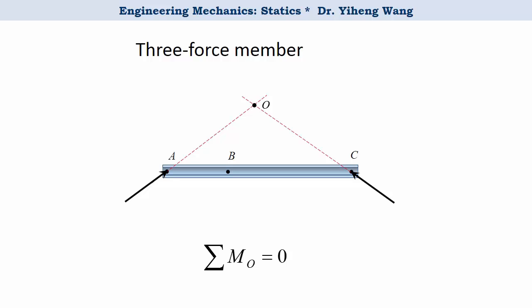Since the third force is the only force that can possibly create moment about point O, because the other two forces have lines of action passing through point O, but it also must create a moment of 0, therefore for that to happen, it must also pass at point O.